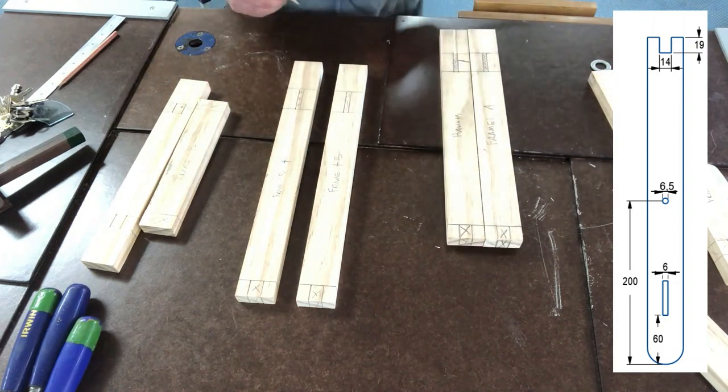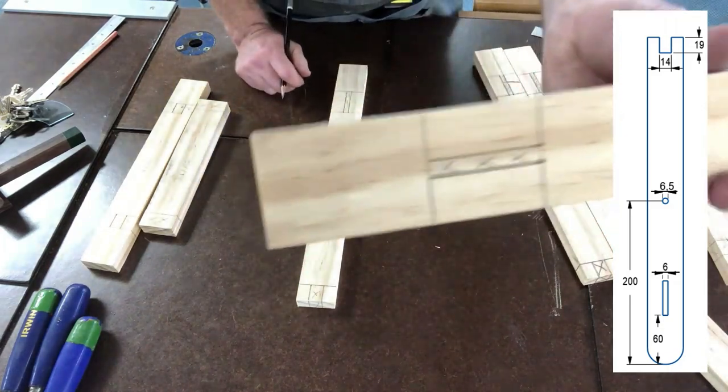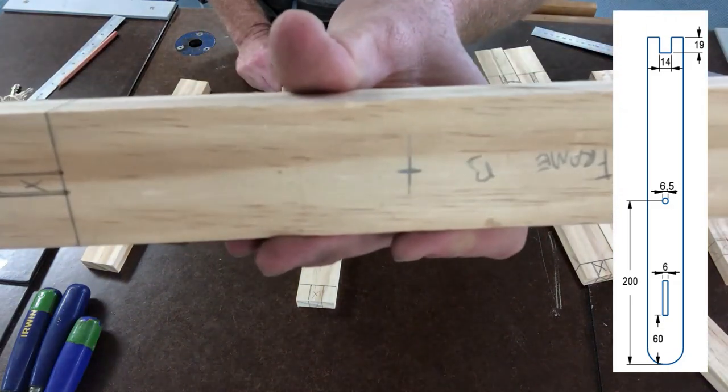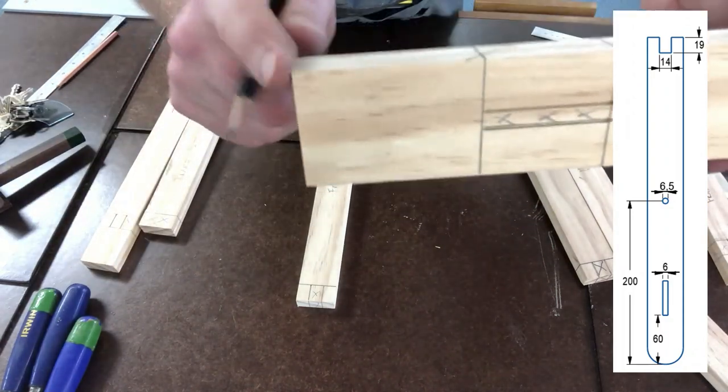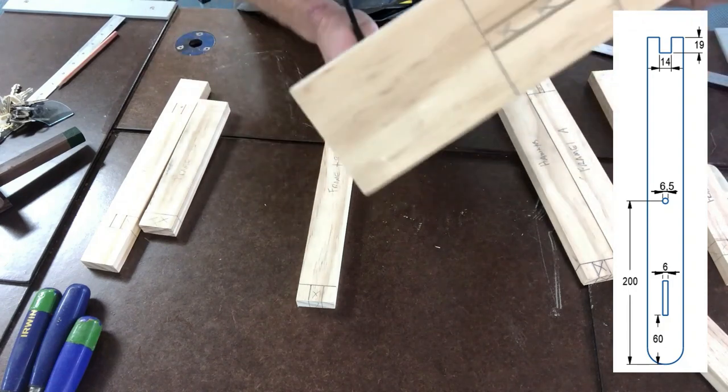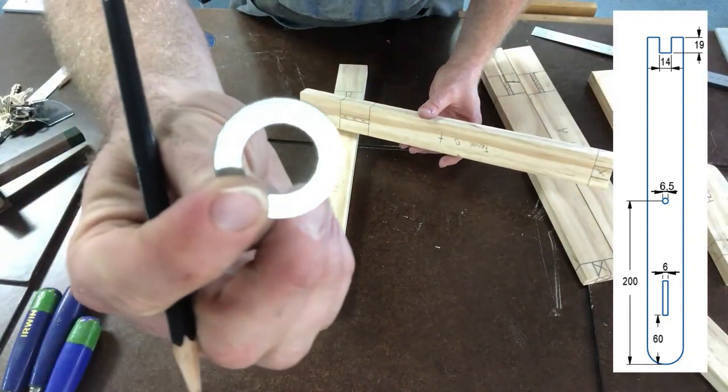So I've done that. Do the same for your other frame. What we also need to do is mark a radius for these sharp corners on the bottom of our leg. What I have here is just an M20 washer.